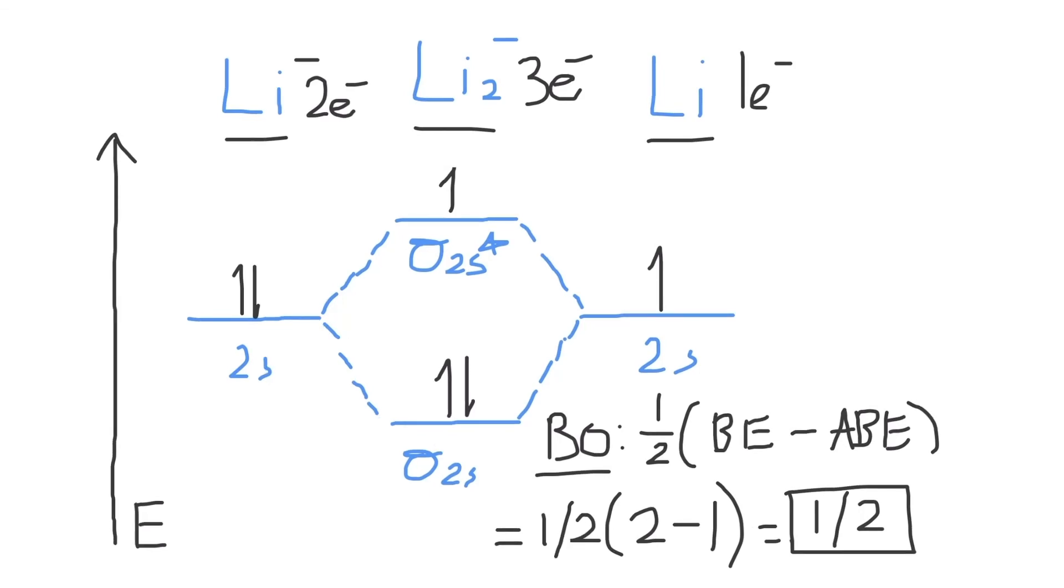Finally, is Li2 minus paramagnetic or is it diamagnetic? Because there is an unpaired electron that exists in the molecular orbitals of the Li2 minus ion, this means that it will express paramagnetism, and we can say that it is paramagnetic.